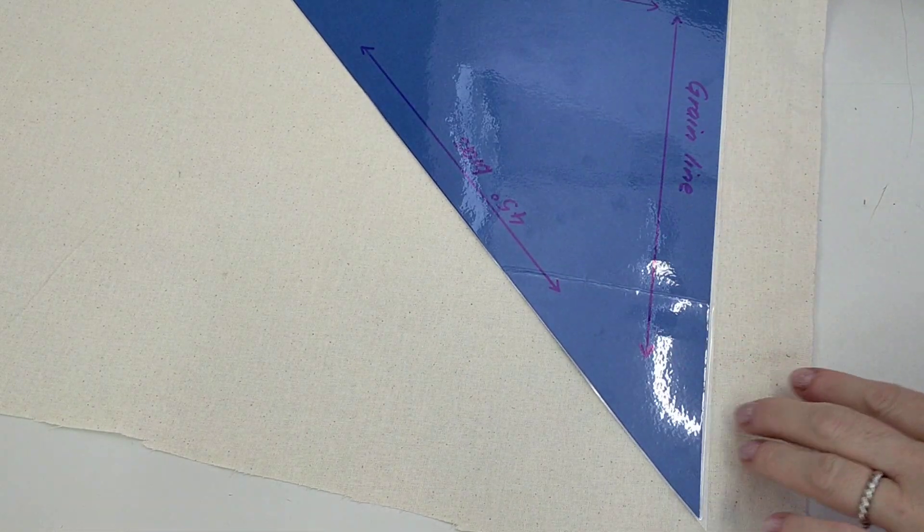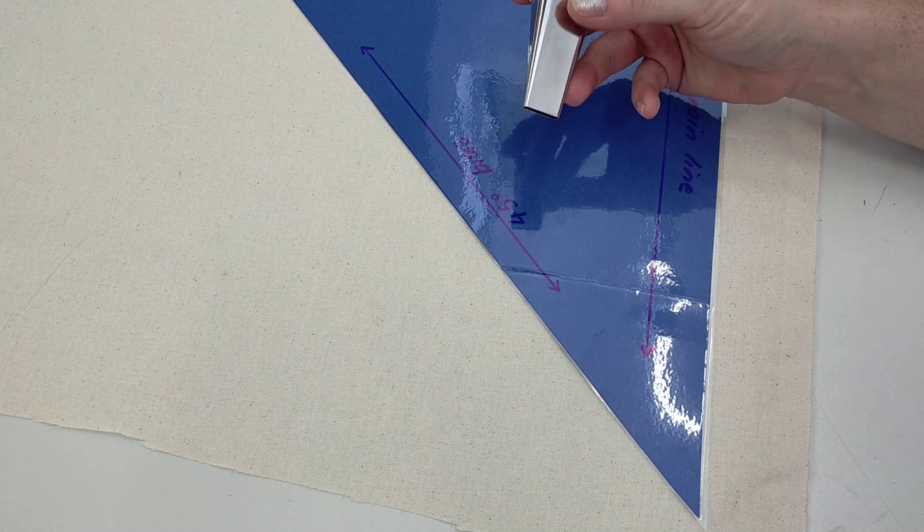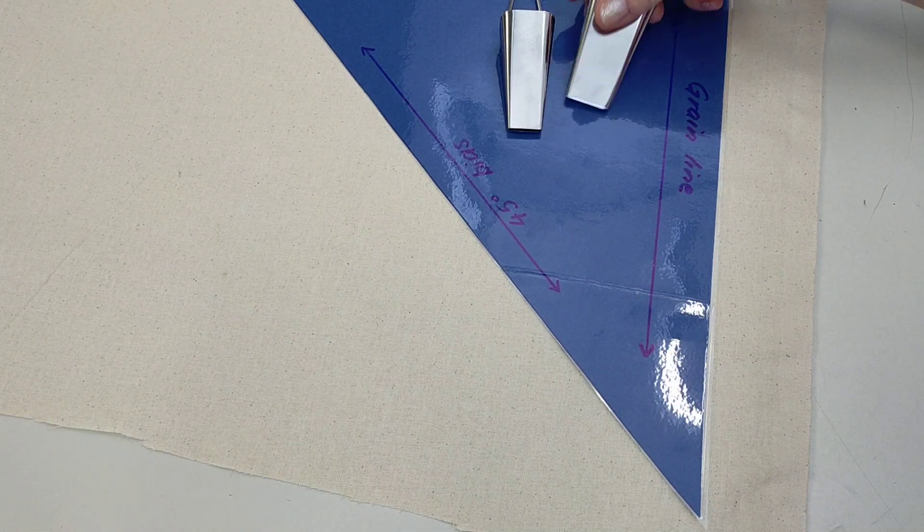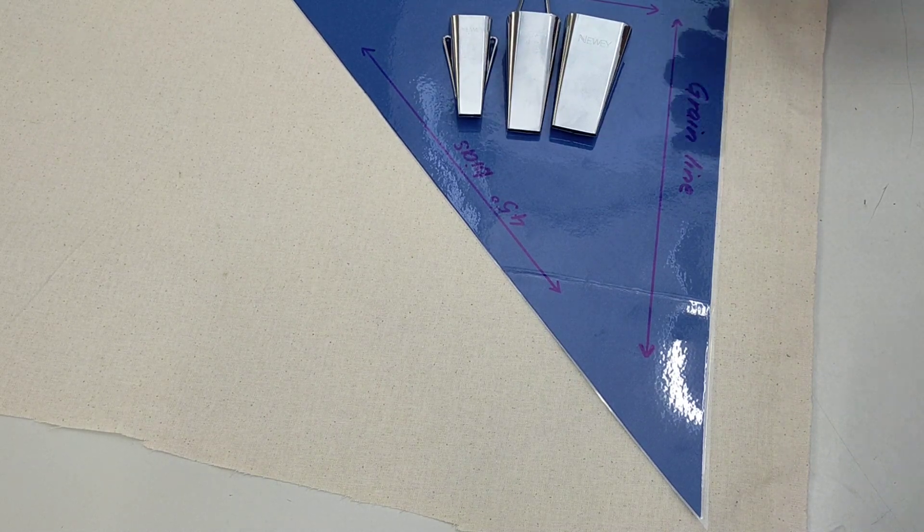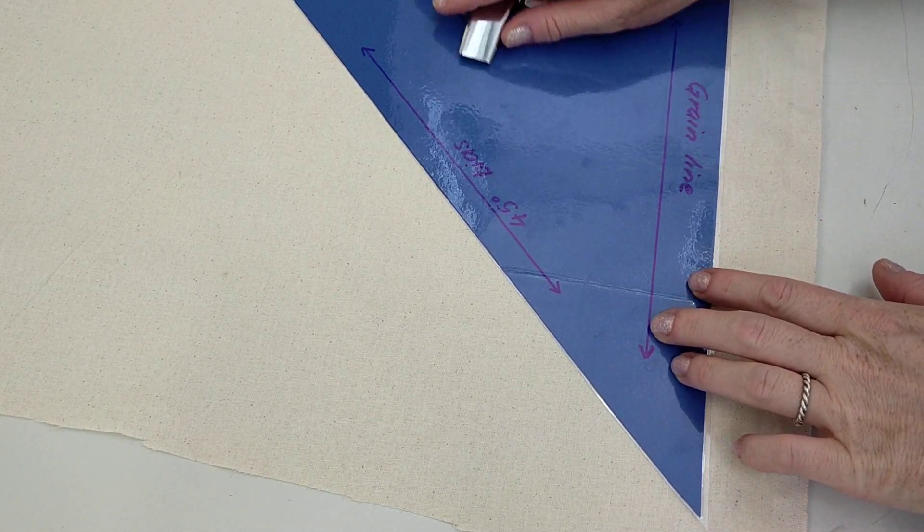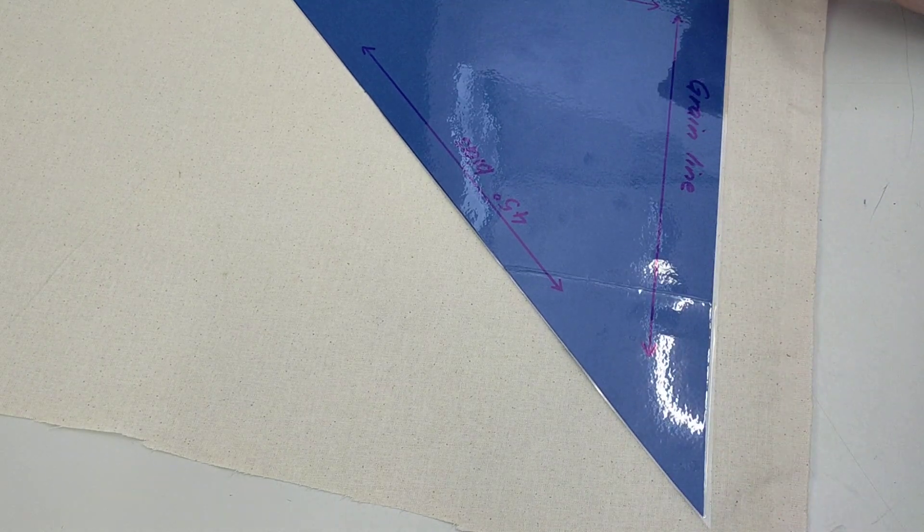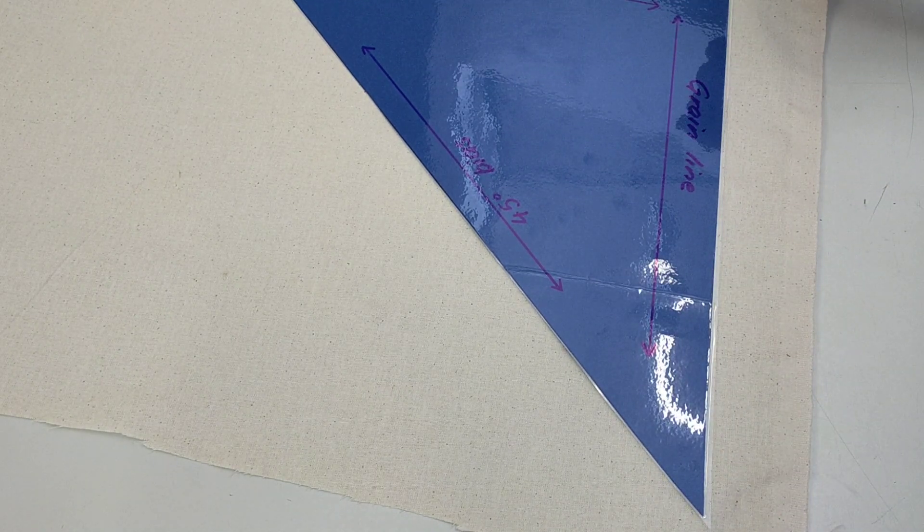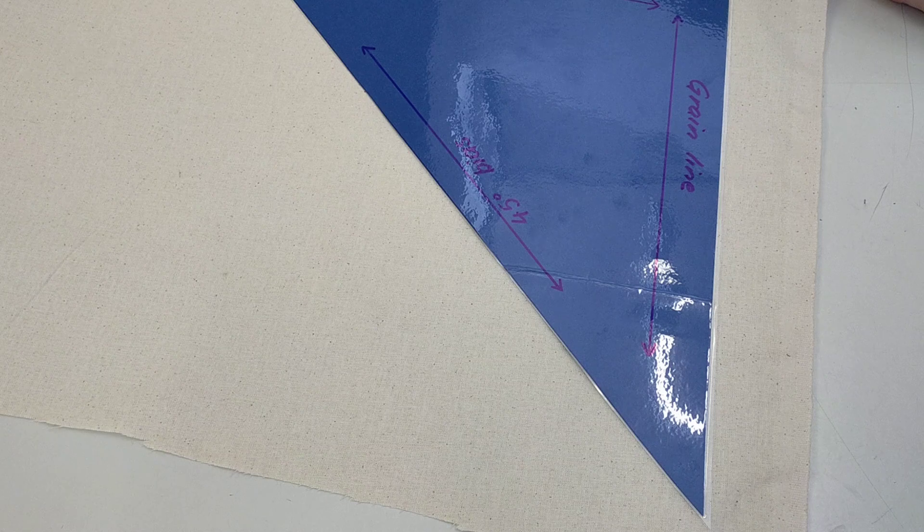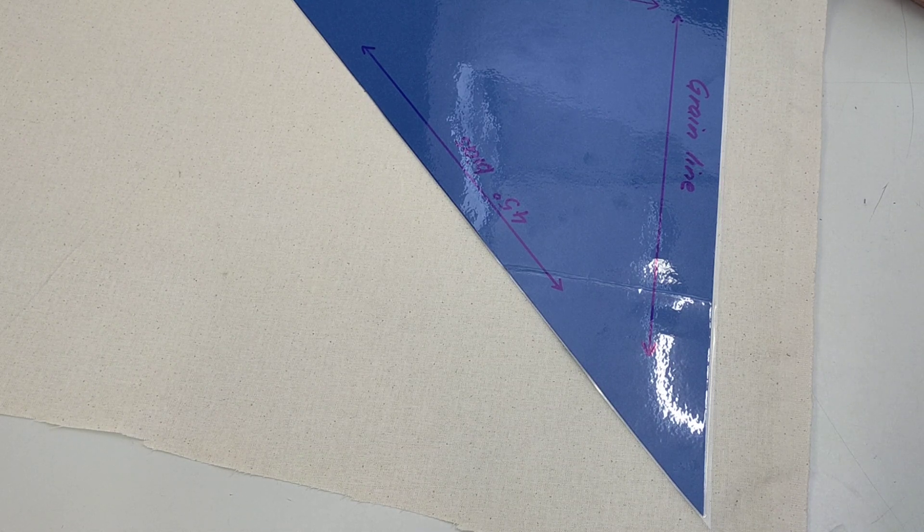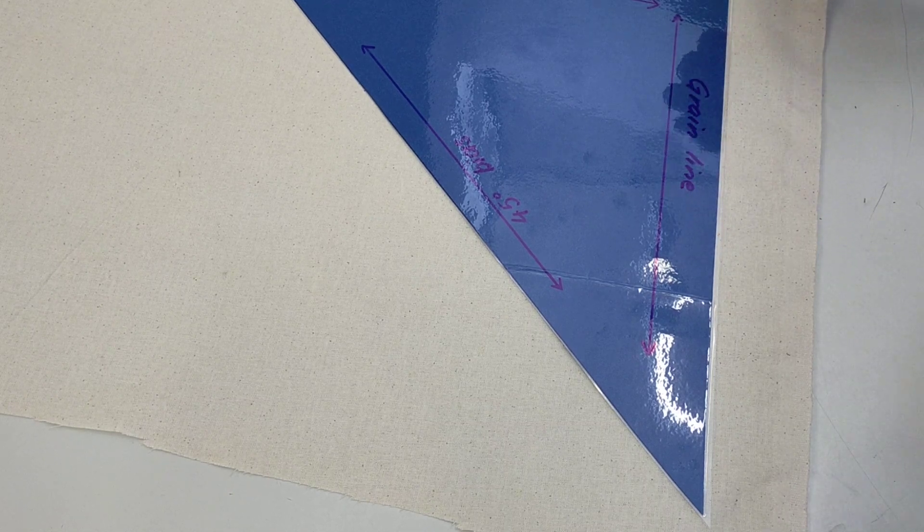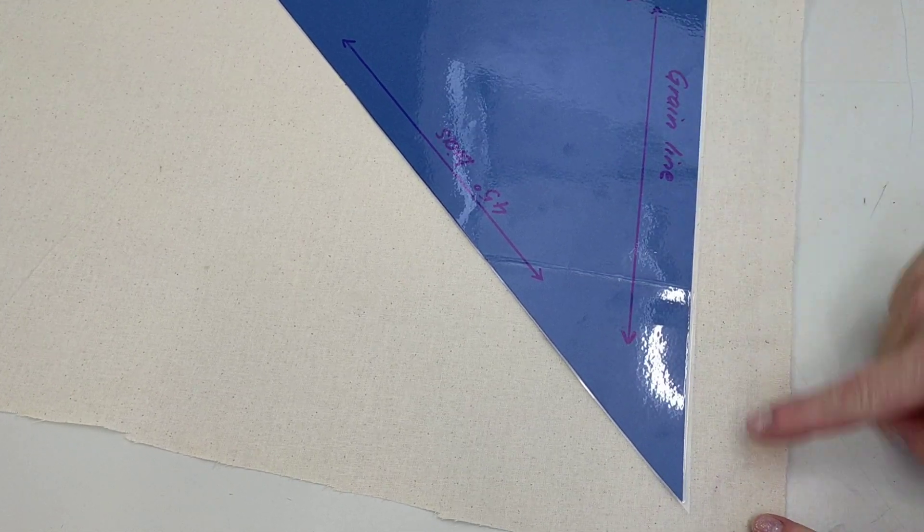The reason why we do a strap cut on the bias is then we can use these bias makers, which make it really easy to perfect a straight and even strap. So that's what we're going to do today. Also, a strap cut on the bias gives you a little bit of stretch as well. You don't want a strap that's completely rigid; you want it to be able to move a little bit with your garment as you wear it.